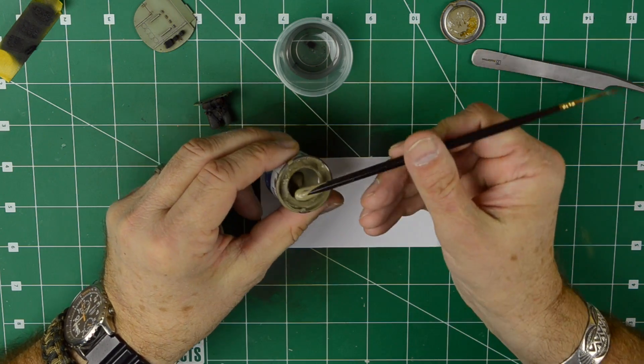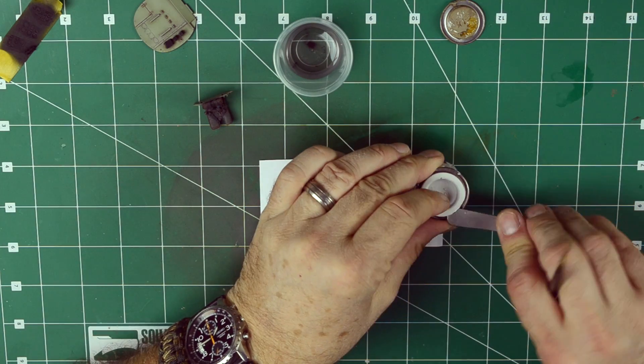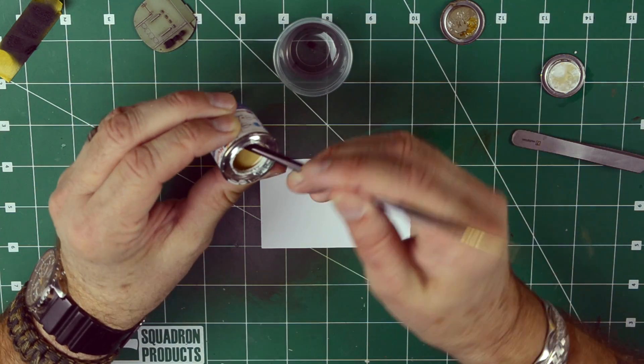Scoop some of the thick off the bottom. Put it on a piece of card. Same thing with the white. Doesn't have to be much, just a little.